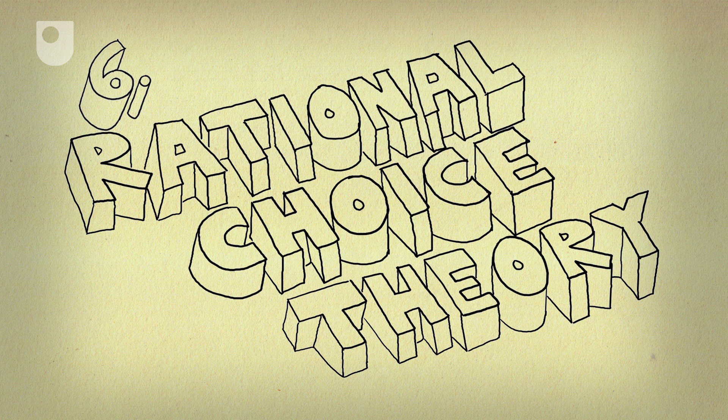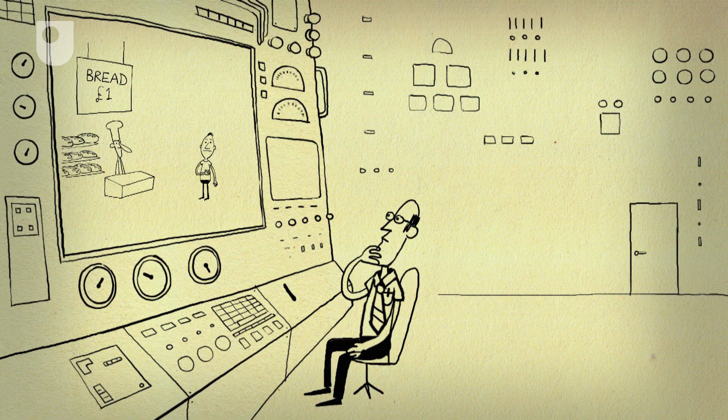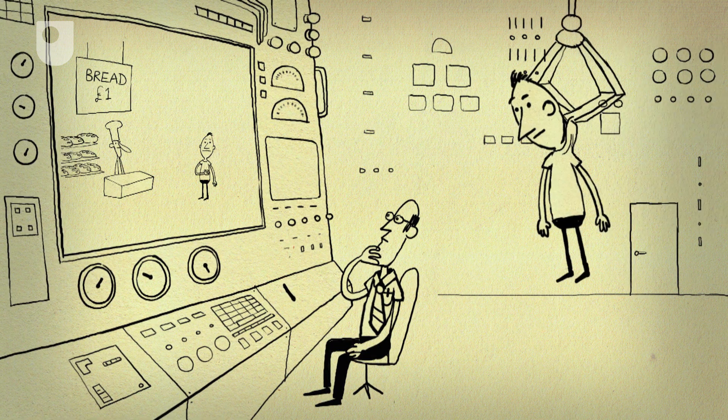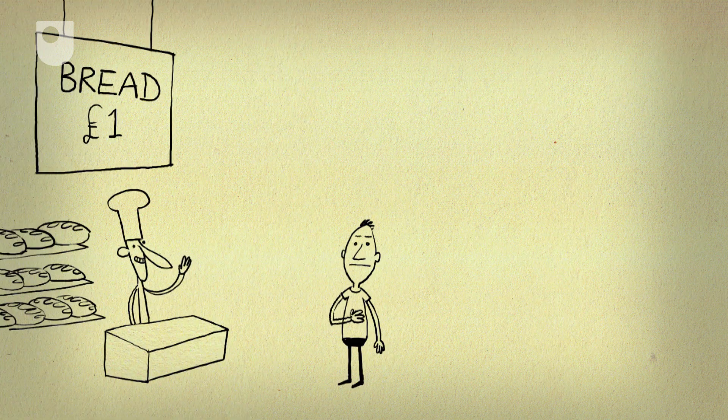Number 6. Rational Choice Theory. Of all the things to factor in when running an economy, the most troublesome is people. Now, by and large, humans are a rational lot.